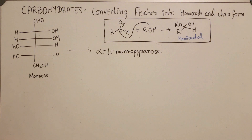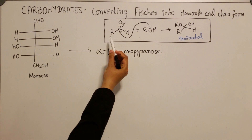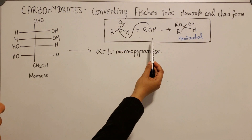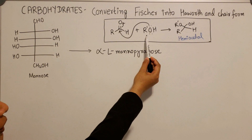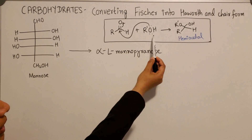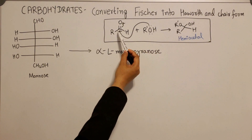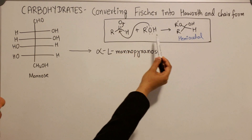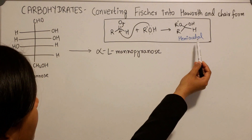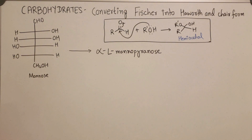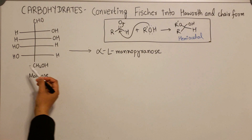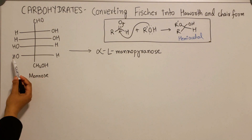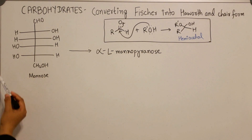Before we get started with the conversion, let's quickly review this reaction where a nucleophile — a hydroxy group, an alcohol group — attacks the electrophilic carbonyl of an aldehyde, resulting in the formation of a hemiacetal. Exactly the same reaction occurs when cyclization happens in carbohydrates in solution.